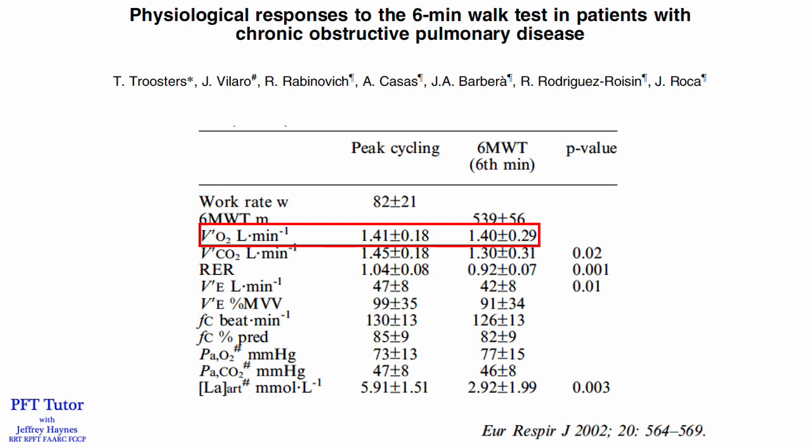While a 6-minute walk test is sometimes referred to as a sub-maximal exercise test, in this study by Troosters, patients with COPD had identical VO2 max during a 6-minute walk test and a cardiopulmonary exercise test. An interesting finding was that achieving VO2 max was much more efficient during a 6-minute walk test than a cardiopulmonary exercise test on a cycle ergometer, with a lower CO2 production, respiratory exchange ratio, and minute ventilation.